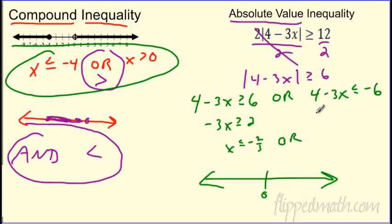Or what's happening over here. Subtract your 4. So you get negative 3x is less than or equal to negative 10. What happens here? When I divide by that negative 3, it flips the inequality. So make sure you flip that inequality. 10 thirds. So 10 thirds is roughly, well it's not roughly, it is 3.333 repeating. And 2 thirds is negative 0.666 repeating.